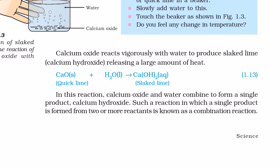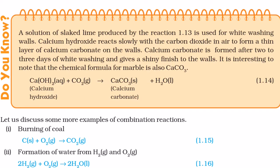The reaction is: CaO (solid), i.e. quicklime, plus H2O (liquid) gives rise to Ca(OH)2 (aqueous), i.e. slaked lime. In this reaction, calcium oxide and water combine to form a single product, calcium hydroxide. Such a reaction, in which a single product is formed from two or more reactants, is known as a combination reaction. A solution of slaked lime produced by this reaction is used for whitewashing walls.